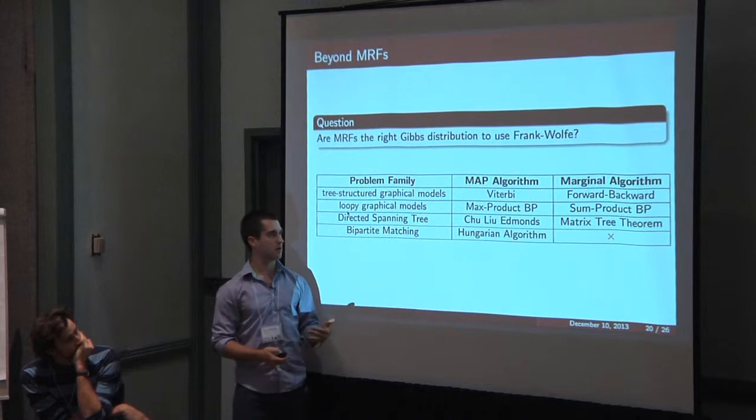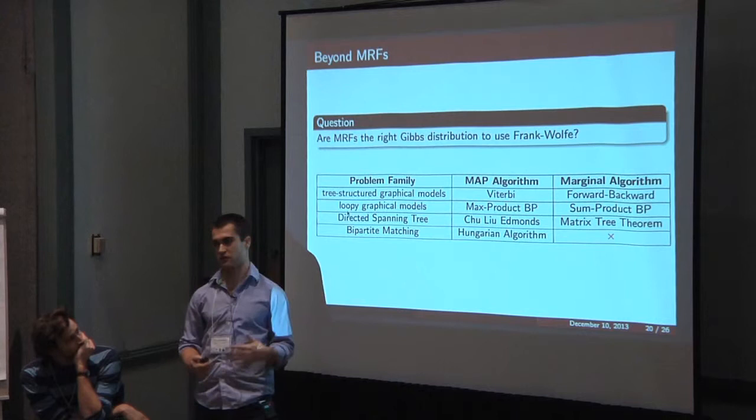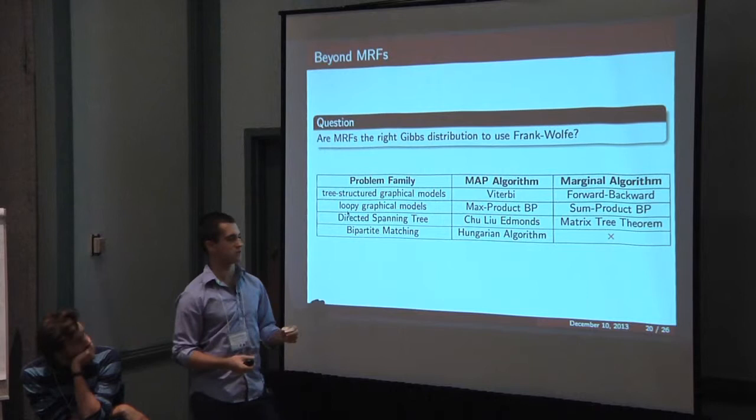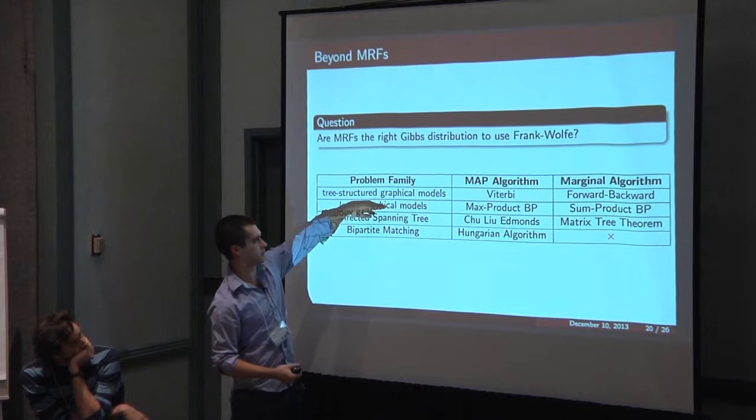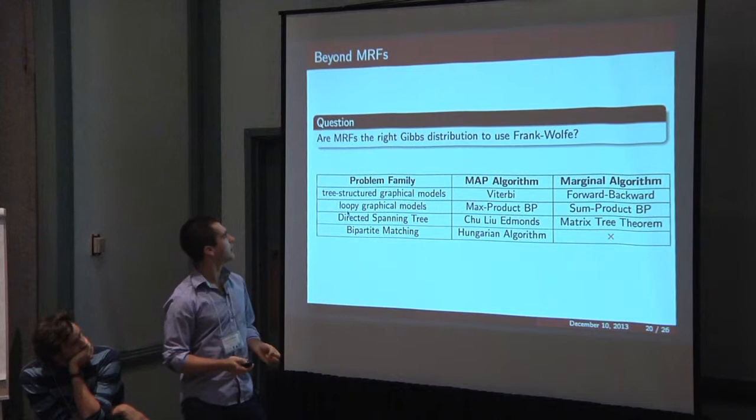One example where this isn't available is for bipartite matching, where you have these polynomial time MAP algorithms, but the marginal algorithms aren't necessarily available. So one potential future direction would be to use this for matchings. You could do maximum likelihood learning in matchings. However, one thing to know is that there's another reduction that basically reduces matching to loopy graphical models, and that works pretty well too. So this might not be that useful.